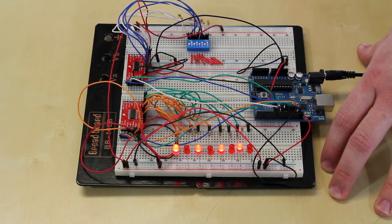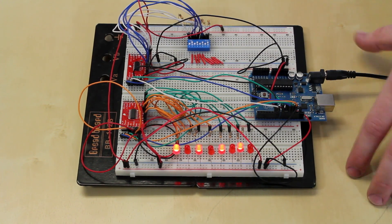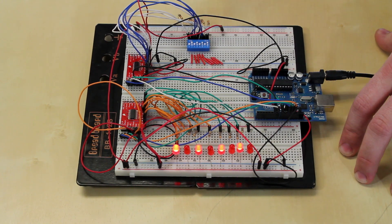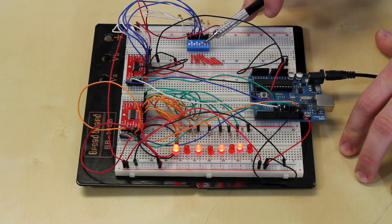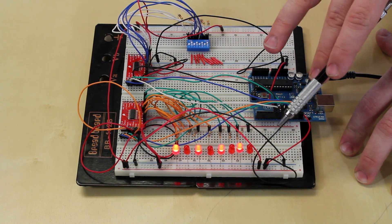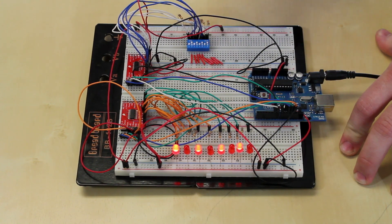So here I've hooked up a shift in register and a shift out register to the same Arduino to give you a demonstration of how they both work. I've taken a dip switch and used it as an input to our shift in register. And I'm using eight LEDs as the output of our shift out register.